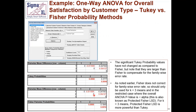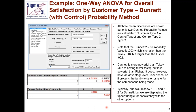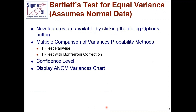I grouped the Tukey and Fisher outputs together in the PowerPoint so it's easier to compare results. You can see that Tukey has a higher p-value, meaning a slight loss of power, but that's necessary to compensate so that you don't get those type 1 errors.